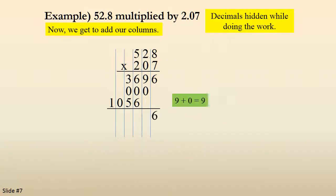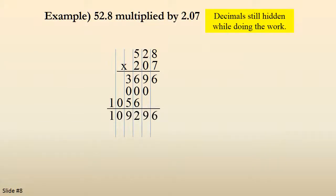6 comes down. 9 plus 0 is 9. 6 plus 6 is 12. Put down the 2, carry the 1. 5 plus 3 plus the 1 gives us 9. 0 comes down. 1 comes down. So we've done the hard work.